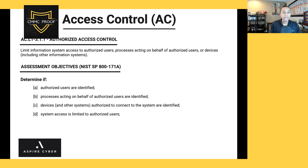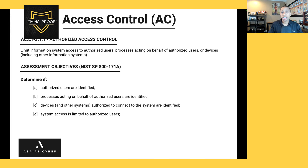This requirement has four assessment objectives — A, B, C, and D. For D, system access is limited to authorized users. Go back to ENTRA ID and review the list of authorized users, ensuring they're assigned roles with least privileges. Not everyone needs access to FCI — only those working on those contracts — so we want to limit access based on roles, with standard users kept separate from privileged users.